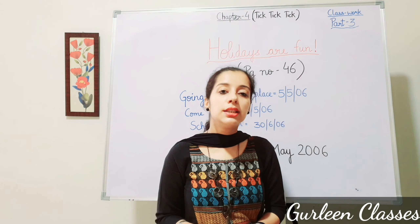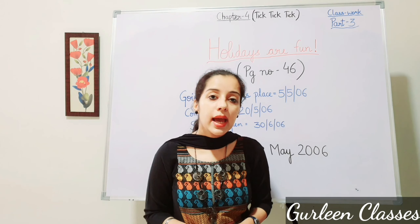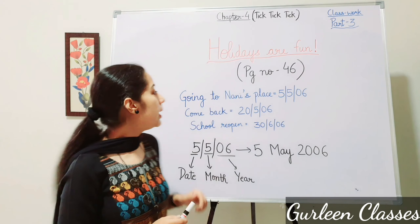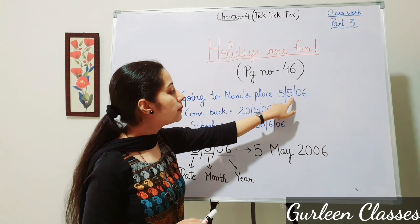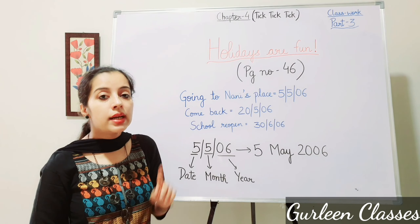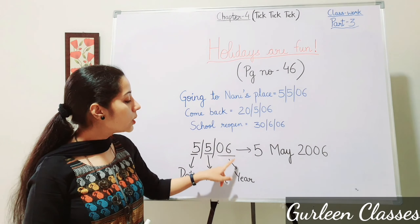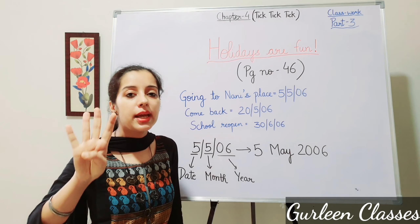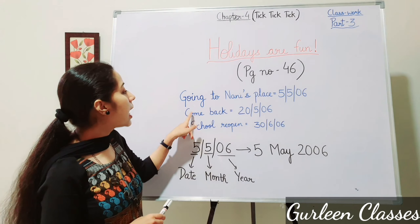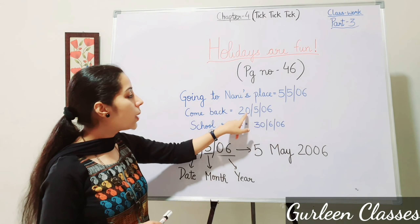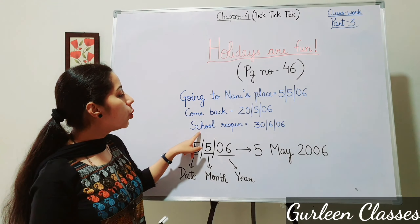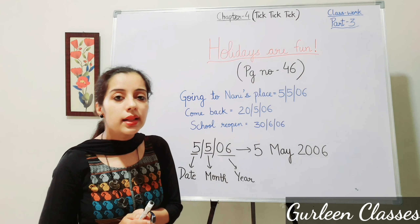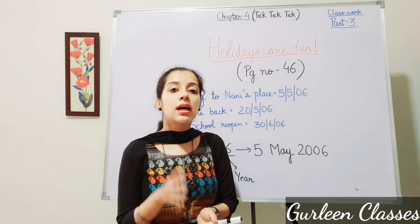Atif decided to write a letter to his cousin Shabana. He wrote the letter on 1/5/06 — that is 1st May 2006. He is going to his nani's place on 5/5/06, meaning 5th May 2006. He is coming back on 25/06, meaning 25th May 2006, and his school will reopen on 30/6/06, meaning 30th June 2006. June is the sixth month; there are 12 months in a year.